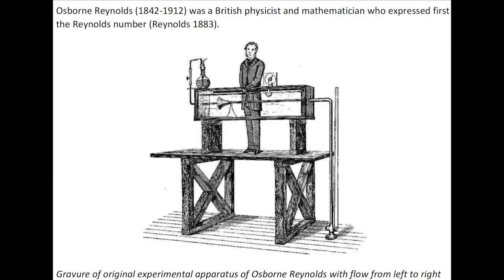Osborne Reynolds was a British physicist and mathematician who first expressed the Reynolds number in 1883, with this gravure showing his original experimental apparatus.